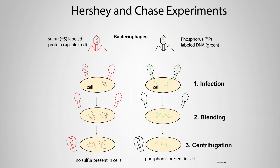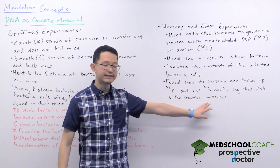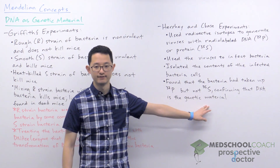Hershey and Chase then used these two types of viruses to infect bacterial cells. After infecting the cells, the scientists isolated the cellular contents of the infected cells and looked for the presence of radio-labeled sulfur and phosphorus. What Hershey and Chase found was that the infected bacterial cells had taken up the 32-phosphorus but not the 35-sulfur, essentially demonstrating that viruses were introducing DNA into the bacteria, not proteins. These experiments confirmed that DNA is the genetic material in cells.